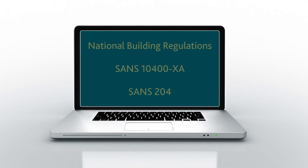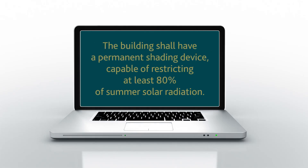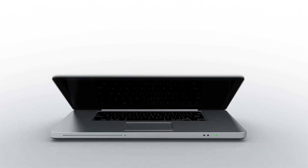In 2011, the NBRs were changed to include clauses that gave rise to our regulations on energy efficiency in buildings. One of the requirements of the regulations is that buildings need to be shaded from at least 80% of summer solar radiation.